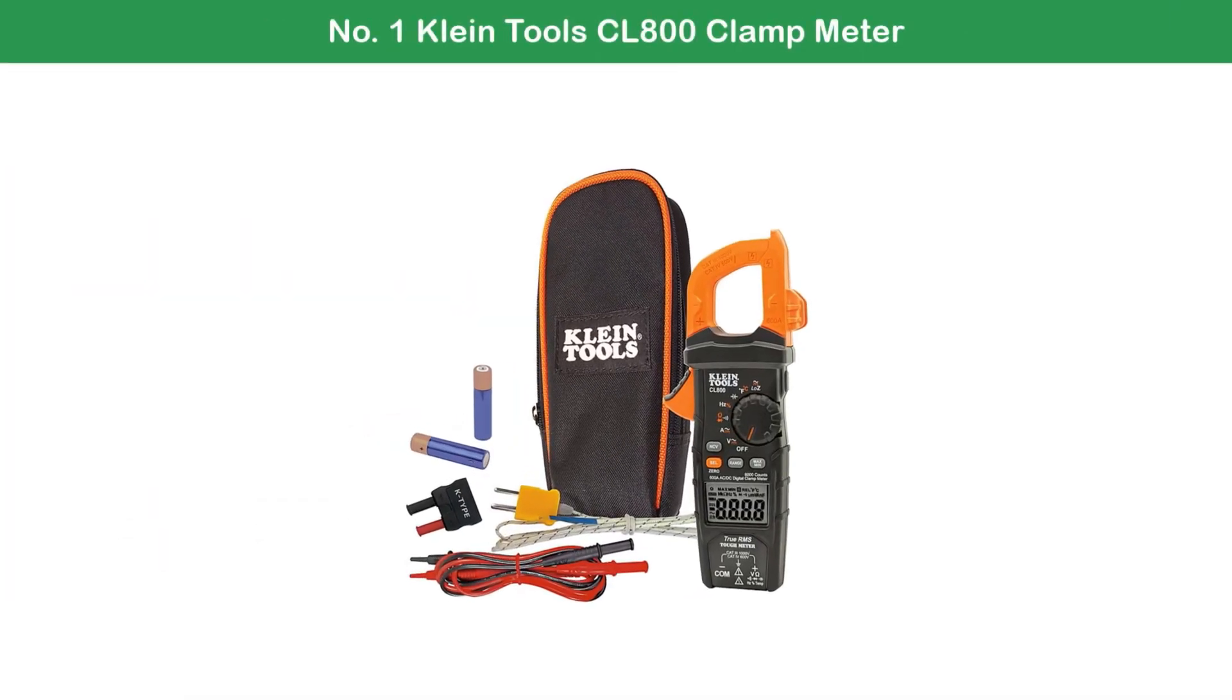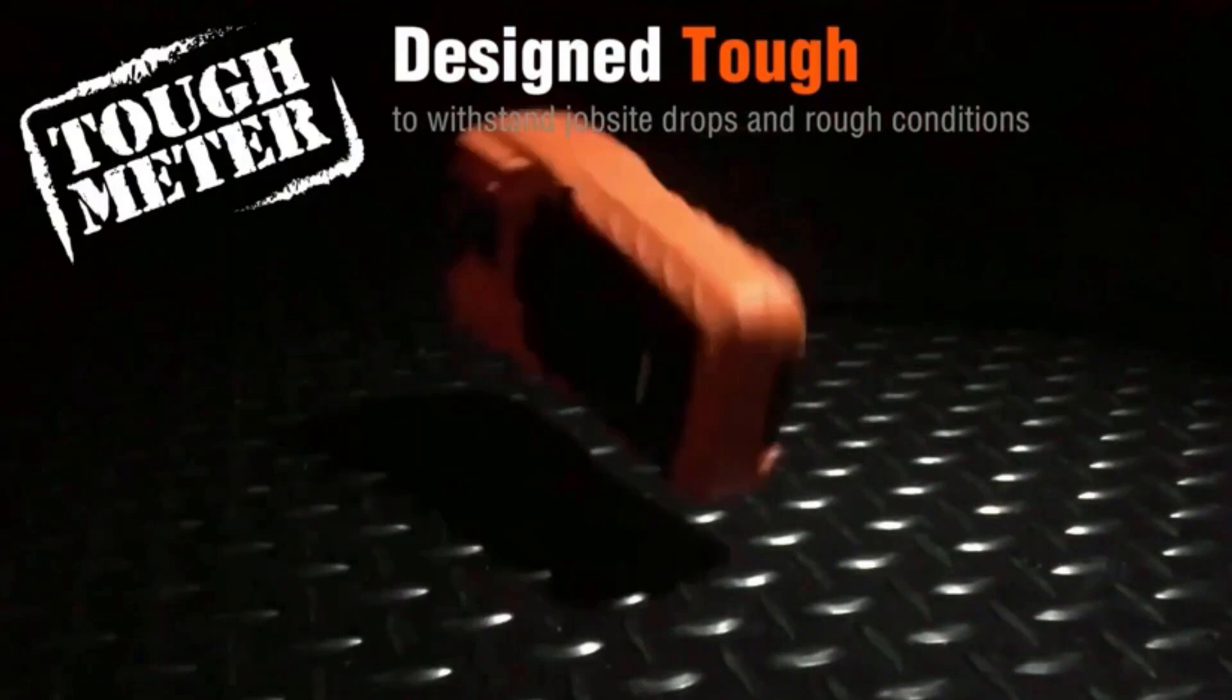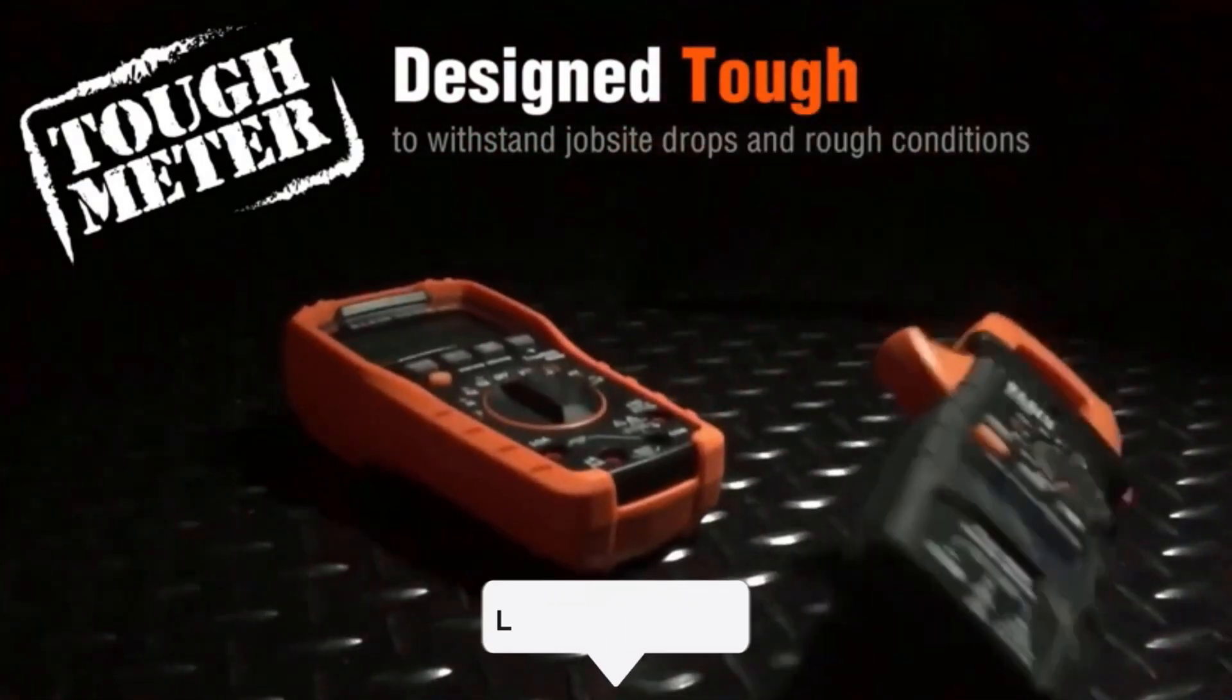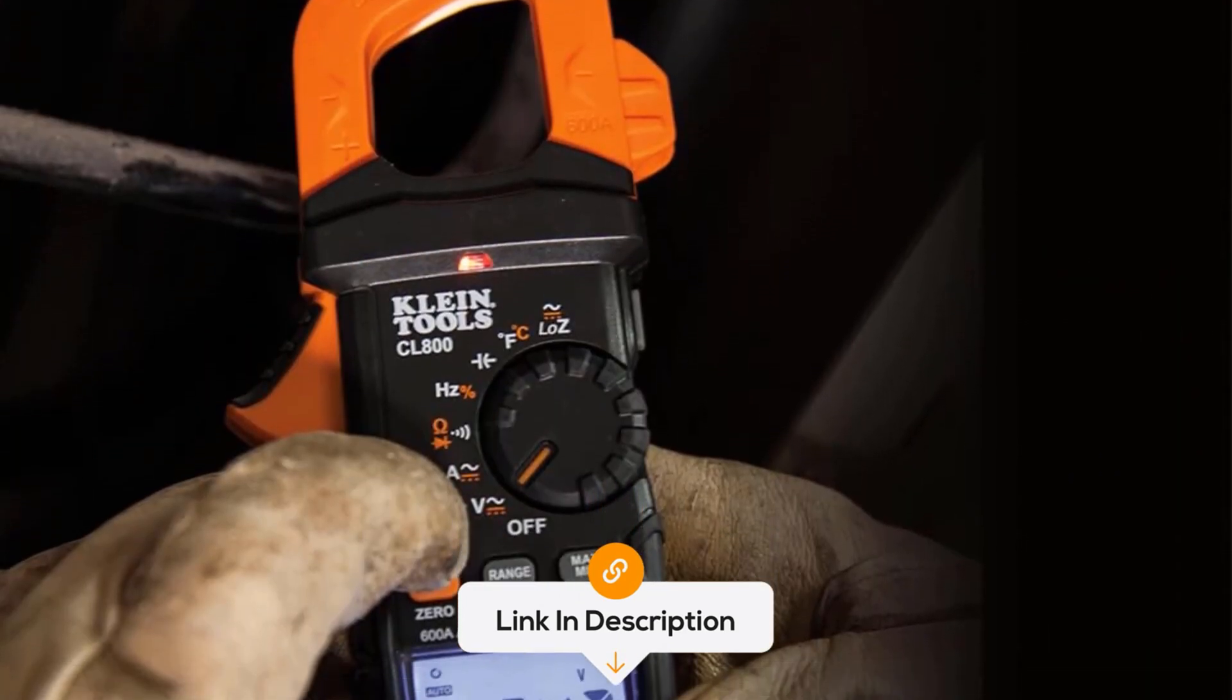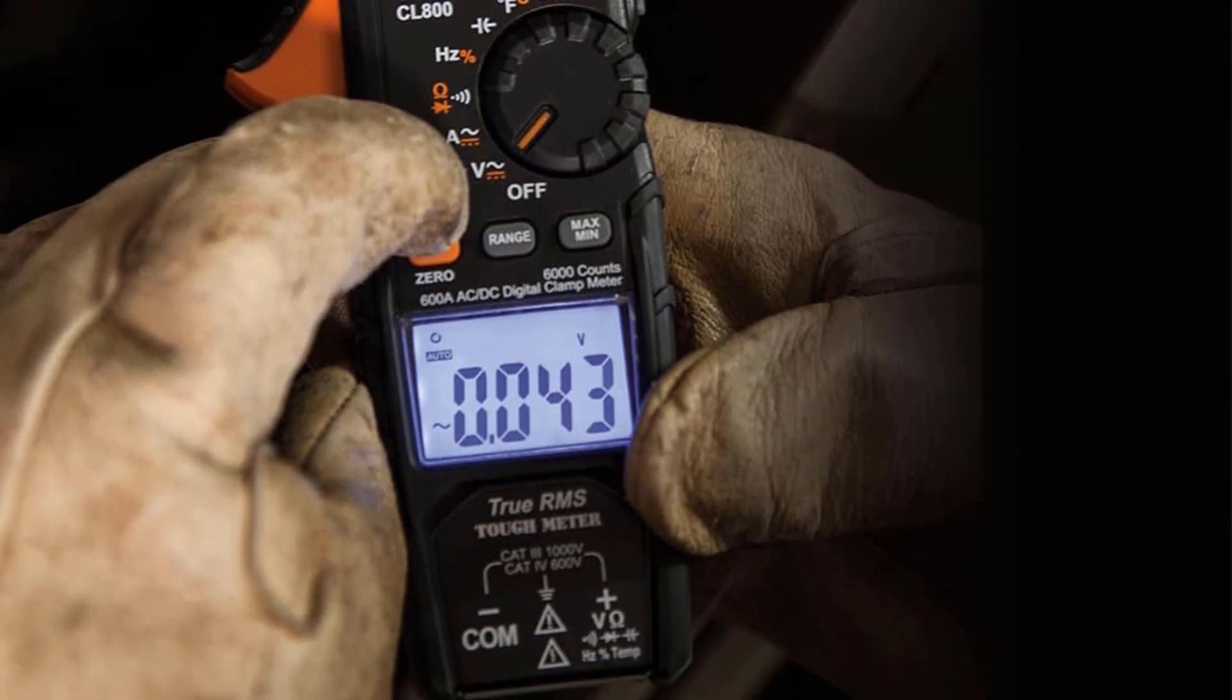Number 1: Klein Tools CL800 Clamp Meter. The Klein Tools CL800 Clamp Meter is a high-performance tool designed for demanding electrical work, making it a standout choice among the best clamp meters. Engineered with precision and durability, it's ideal for professionals tackling complex electrical systems.